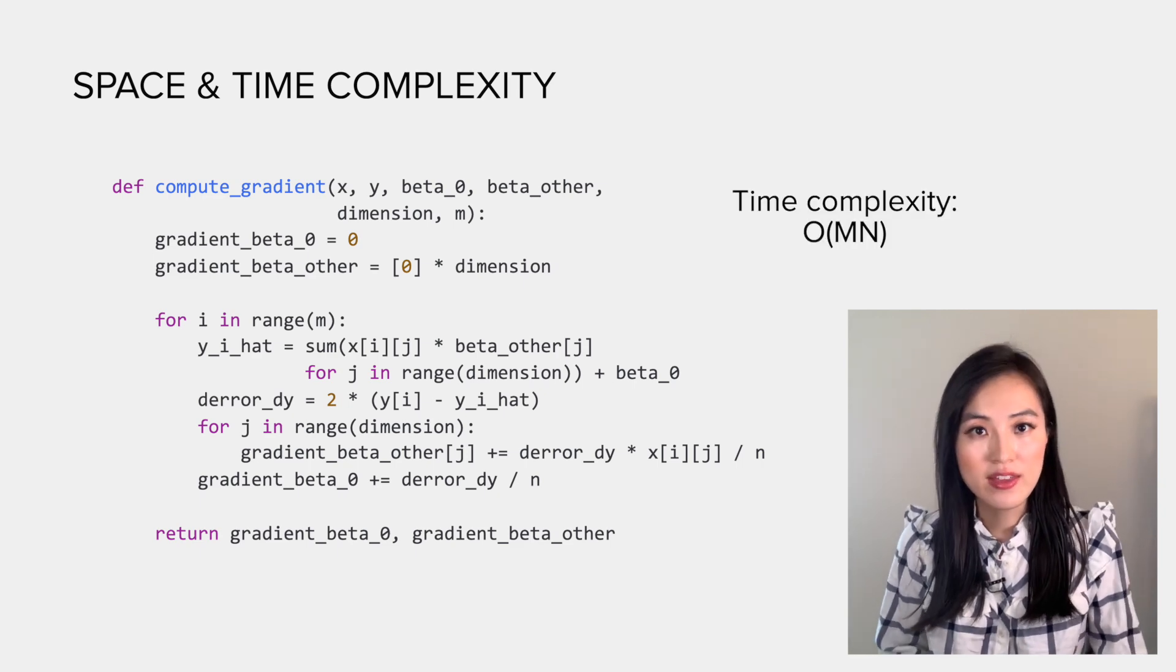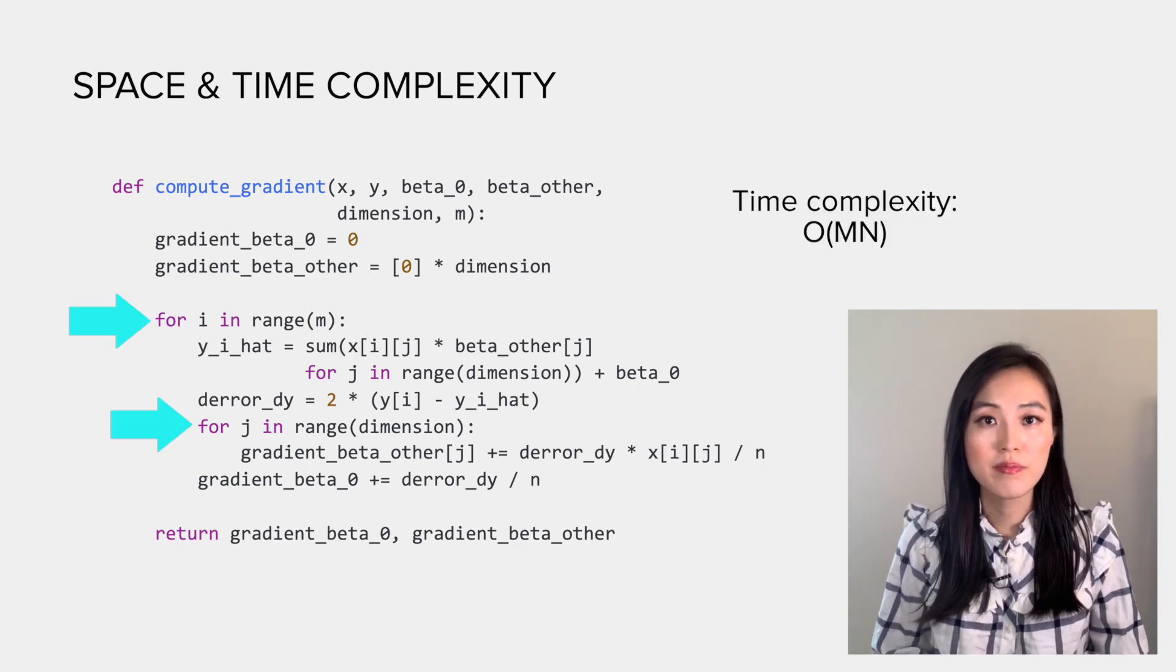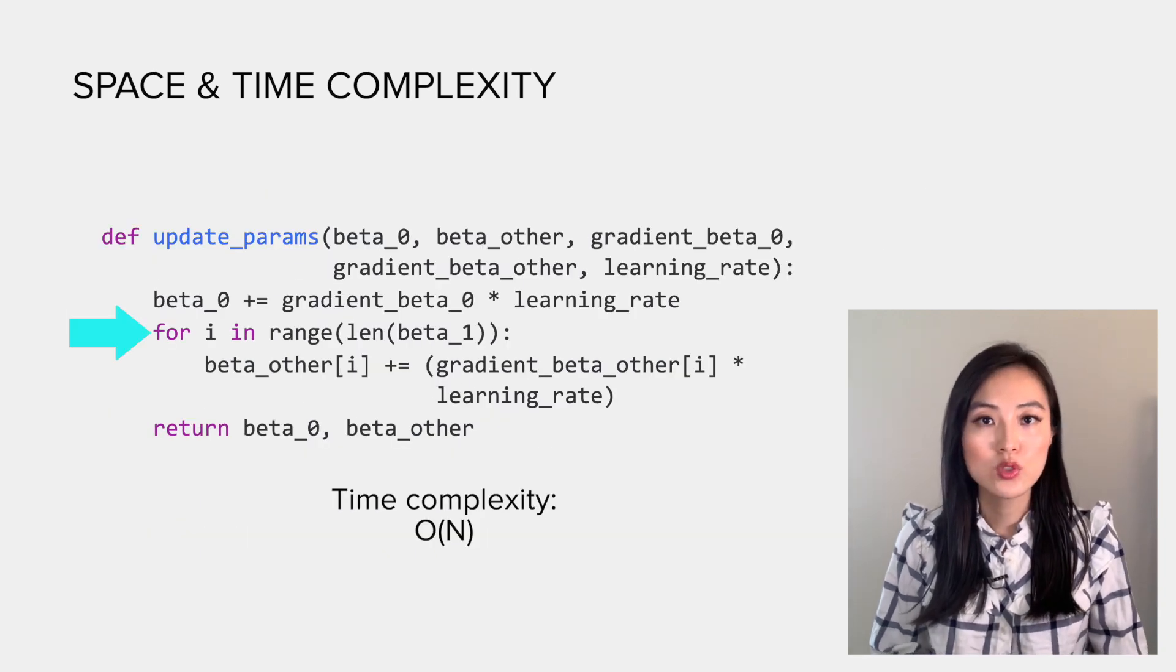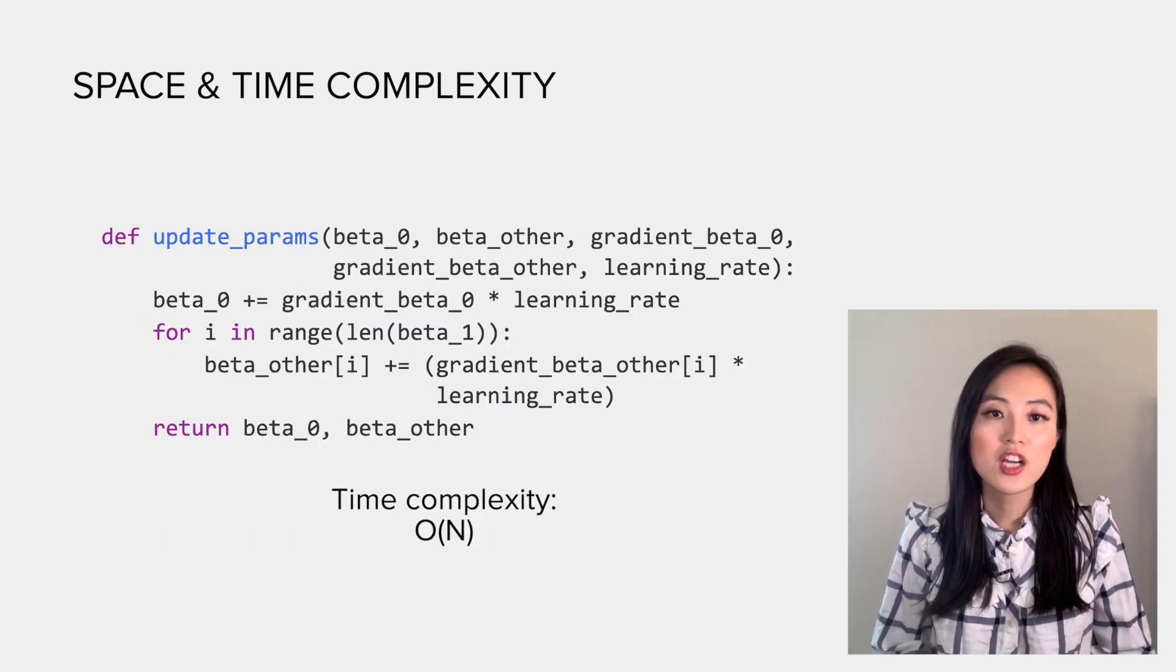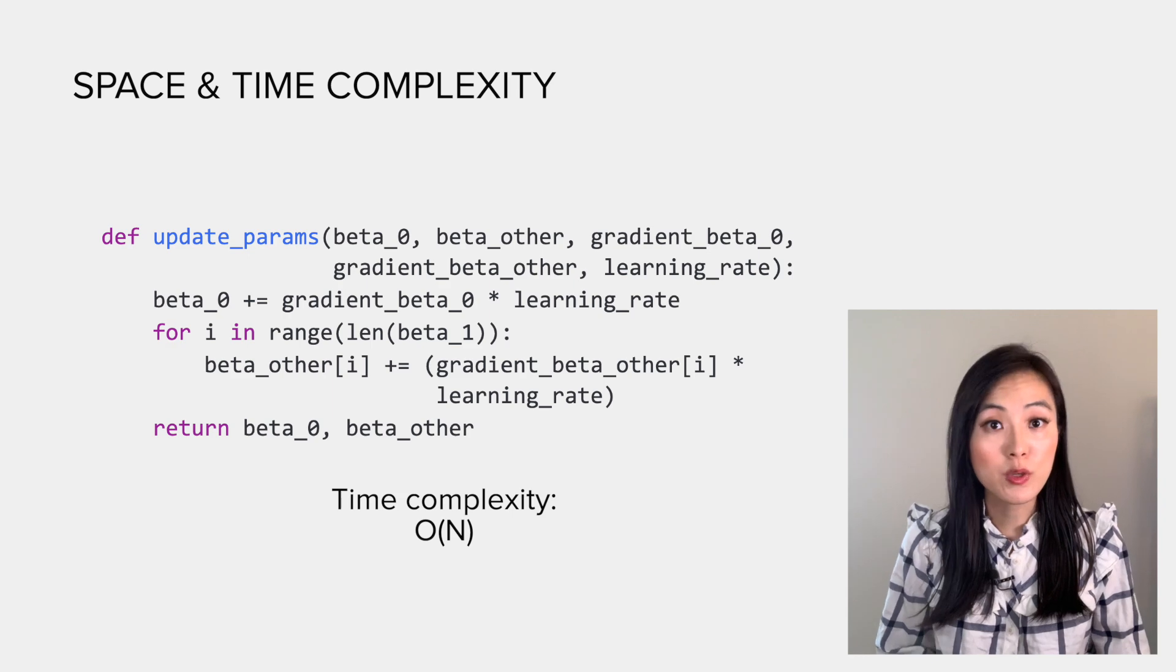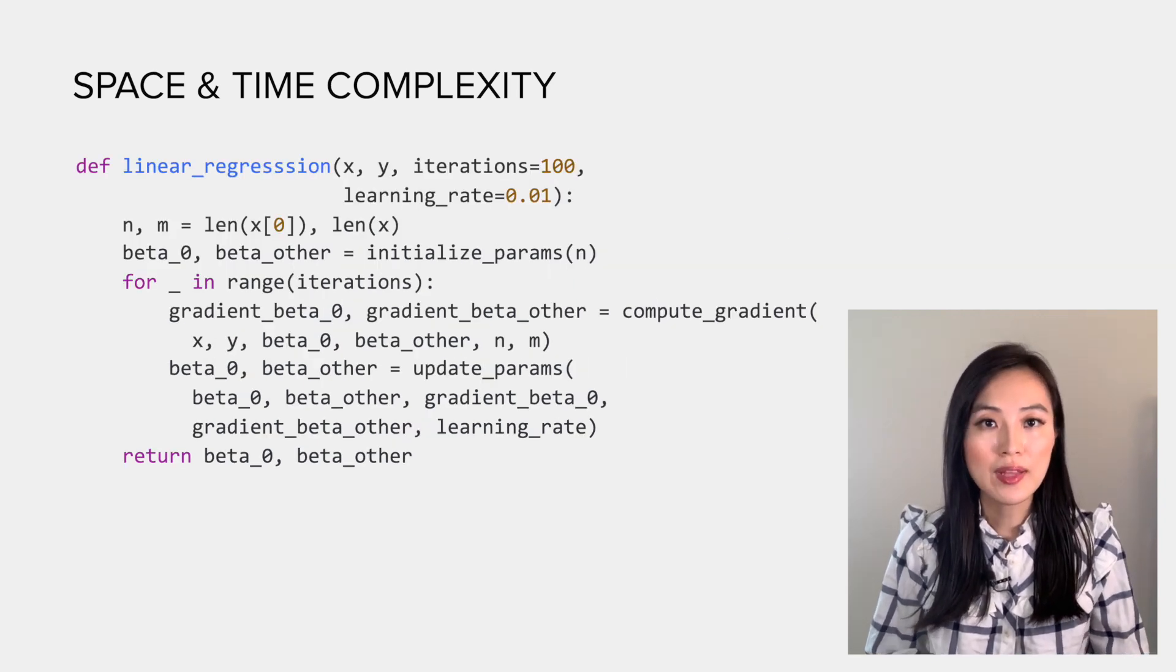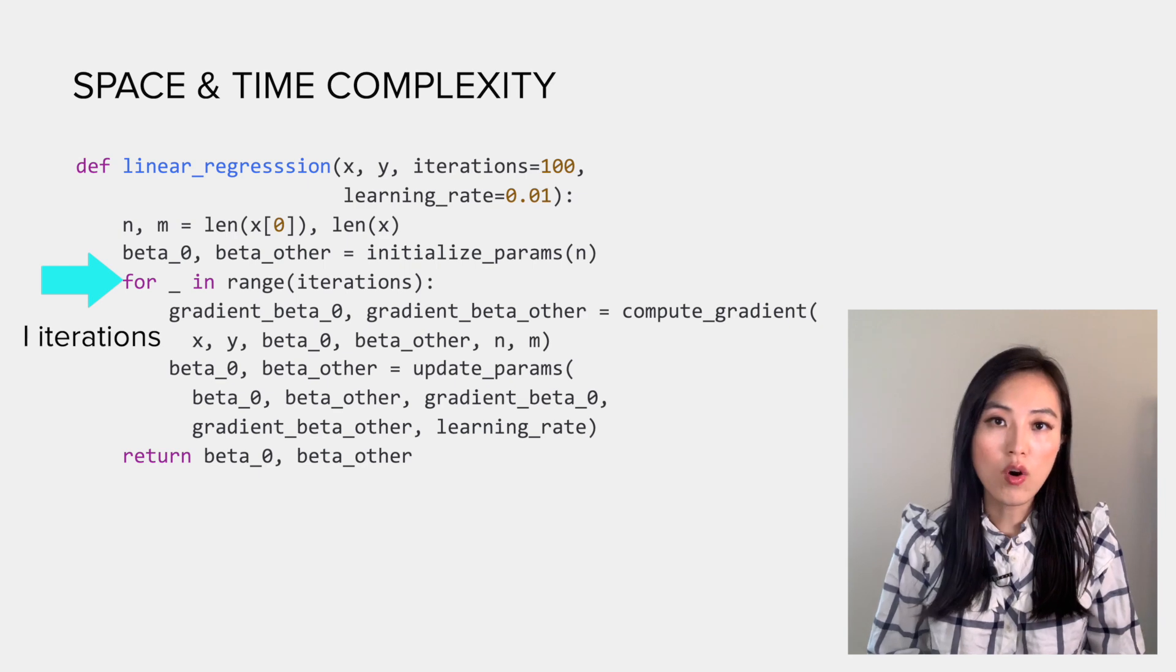Suppose we have n independent variables and the total number of data points is m. Then in each iteration, it takes O(mn) to compute the gradient because of the double loop, and it takes O(m) to update the betas.